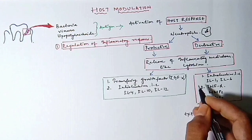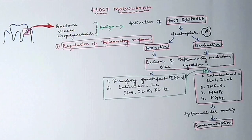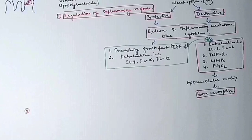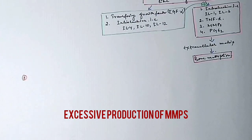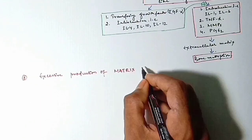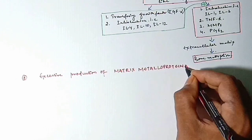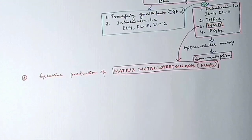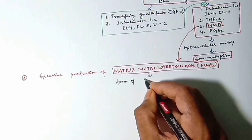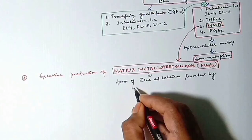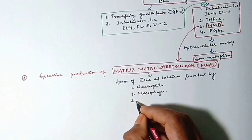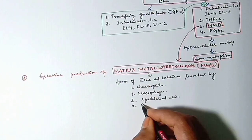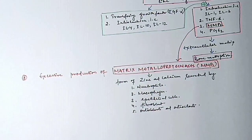Here comes the second point that is excessive production of MMPs or matrix metalloproteinases. So what are matrix metalloproteinases? These are the form of zinc and calcium secreted by different cells, that is neutrophils, macrophages and some epithelial cells, fibroblasts, osteoblasts and osteoclasts. Their function is to degrade the extracellular matrix.